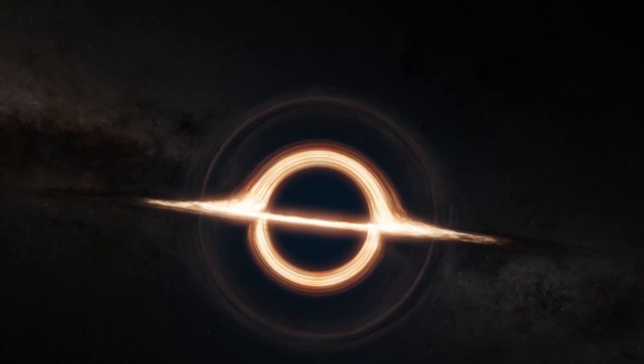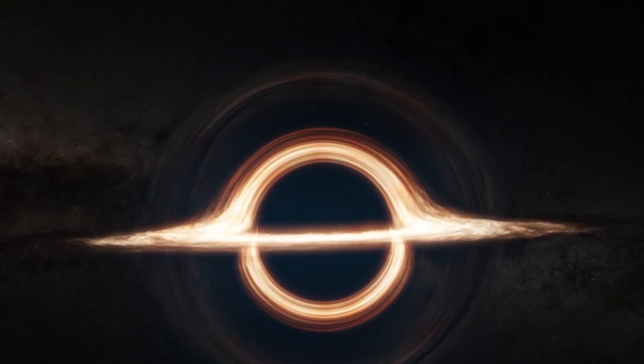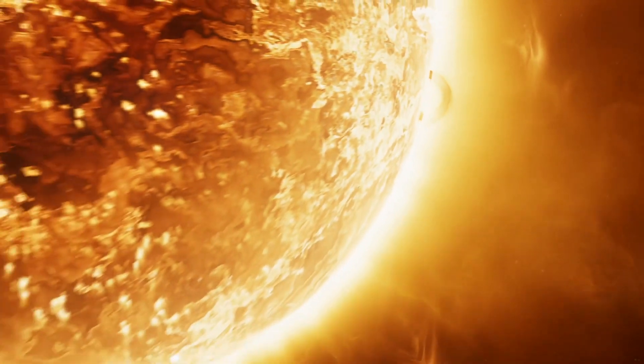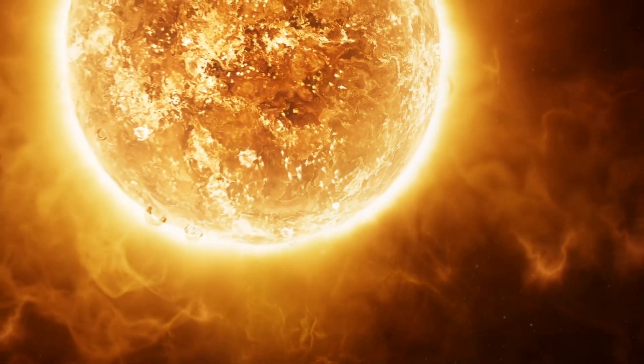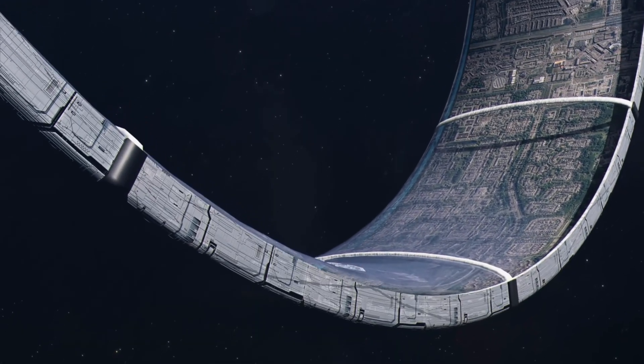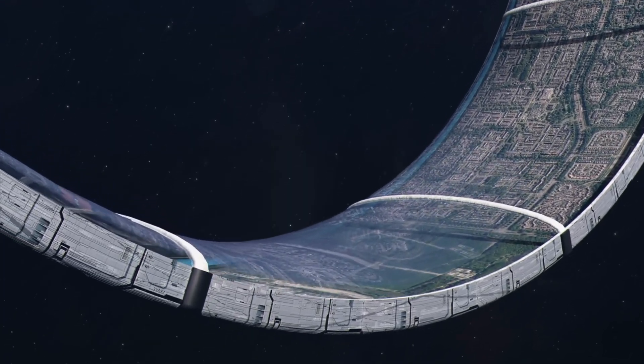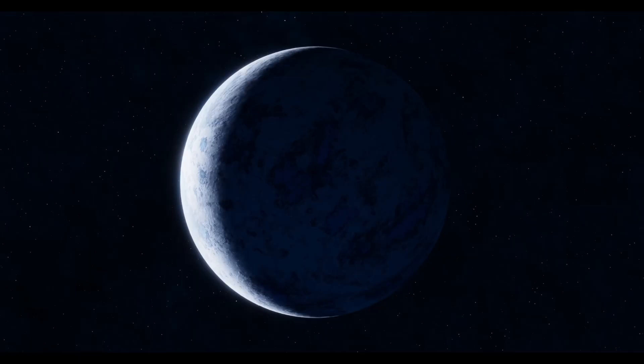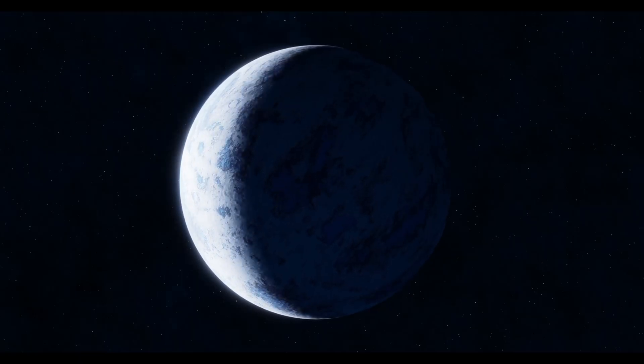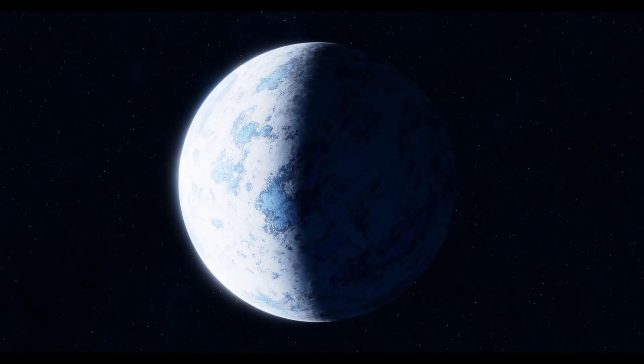We've already sent spacecraft to the edges of this vastness. Voyager 1, launched in 1977, is now over 24 billion kilometers from Earth. Even at 17 kilometers per second, it would take more than 70,000 years to reach the nearest star. So if we struggle to leave the solar system, what hope do we have of measuring the universe itself? The answer lies not in travel, but in light, the messenger that crosses cosmic gulfs and brings us the story of everything.